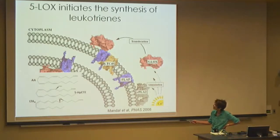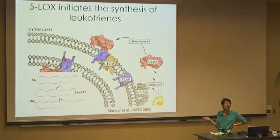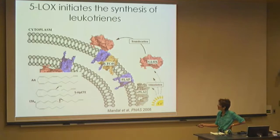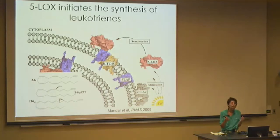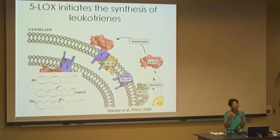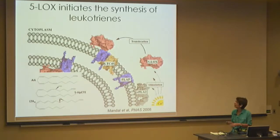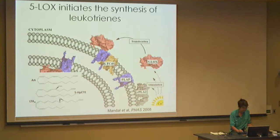5-lipoxygenase takes the arachidonic acid out of FLAP and converts it to this compound — we call it HPETE, short for hydroperoxyeicosatetraenoic acid. It's a peroxide on arachidonic acid. Then in the same active site, it converts this to a molecule called leukotriene A4. Leukotriene A4 was first discovered by extracts of bronchial tissue, and basically it promotes bronchoconstriction. The downstream products of leukotriene A4 are one of the things that induce asthma — bronchoconstriction and smooth muscle growth. So if we can kill this activity, we might come up with a bronchodilator.